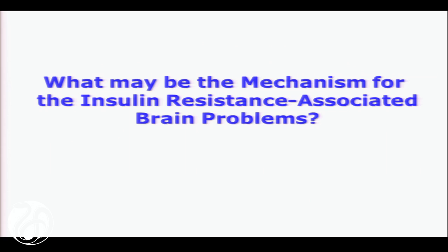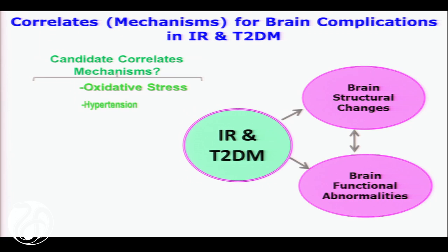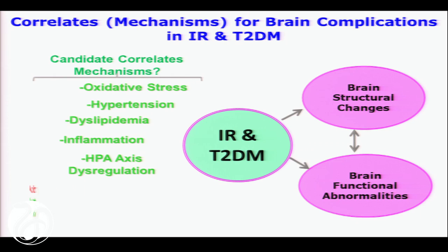So what could be the mechanisms for this? Obviously the mechanisms are going to be very complex, but I'm only going to focus on one thing today, which is microvascular problems — vascular reactivity. And others have hinted at that today in the placenta and so forth.